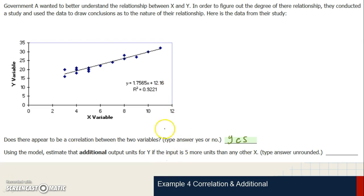We want to know what the additional output for y would be if we were five more units for x. So if you look where x is right now, somewhere between 10 and 11, let's assume that it's 11. If we want five more units, we want something like 16, which would be over here. So if we extended this line from 11 to 16.